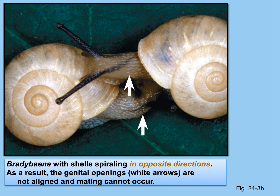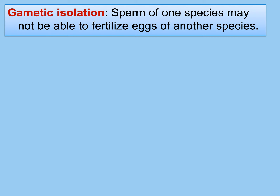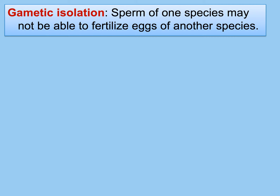Mechanical isolation is the lock-and-key concept with arthropods, or things not lining up as with snails. The genital parts don't line up because the shells swirl in opposite directions, so the whole anatomy of the animals is reversed and doesn't align.